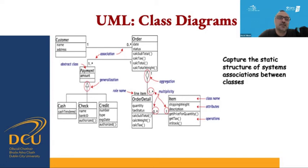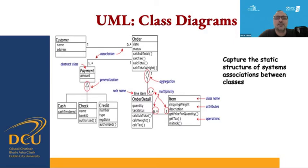We can see the customer class, and ultimately there would be states and behaviors of any class. Here we only have the state — we don't have the behaviors. The customer class is directly connected with an order class, which shows that an order should have at least one customer, meaning that if you want to order something, you need to become a customer. However, you can be a customer without having any order — it can be zero — or you can have multiple orders.